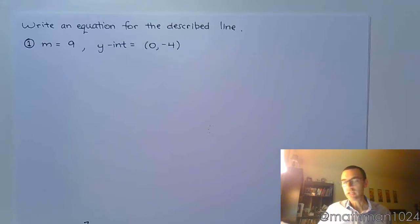I want you to write an equation for the line that has a slope of 9 and a y-intercept of 0, negative 4.